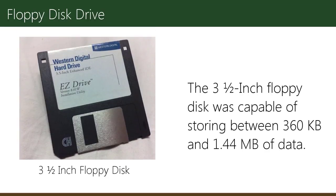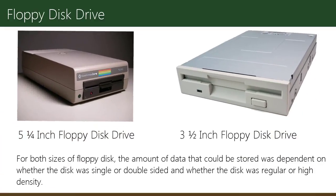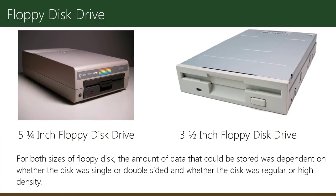The 3.5-inch floppy disk was capable of storing between 360 KB and 1.44 MB of data. For both sizes, the amount of data that could be stored depended on whether the disk was single or double-sided and whether the disk was regular or high density.